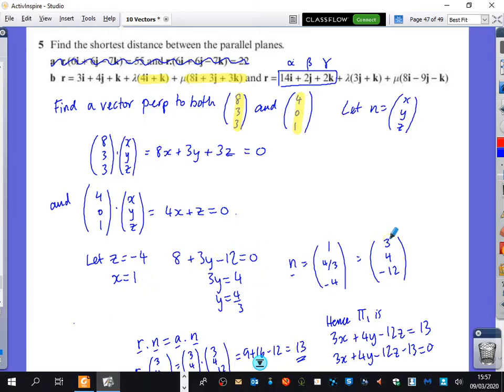Solved the equations and came up with what the normal was: 1, 4/3, and minus 4. But I gave it all integers by multiplying everything through by 3.